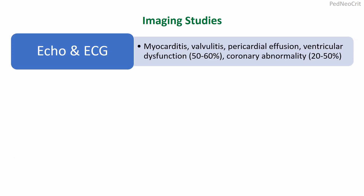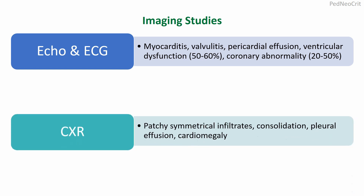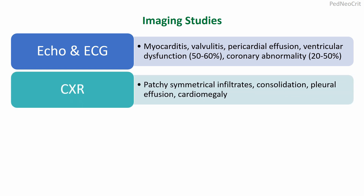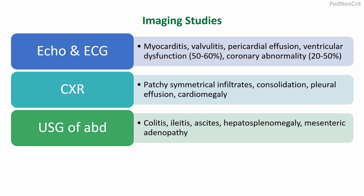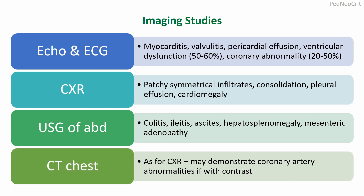Imaging studies: on ECHO and ECG, there could be myocarditis, valvulitis, pericardial effusion, ventricular dysfunction, and coronary abnormalities. Chest X-ray may show patchy symmetrical infiltrates, consolidation, pleural effusion, or cardiomegaly. Ultrasonogram of abdomen may show colitis, ileitis, ascites, hepatosplenomegaly, and mesenteric adenopathy. In CT scan of chest, there can be features similar to chest X-ray and additionally coronary artery abnormalities if contrast is used.